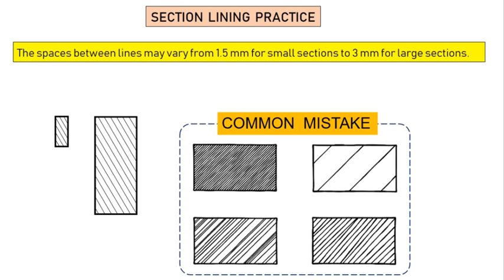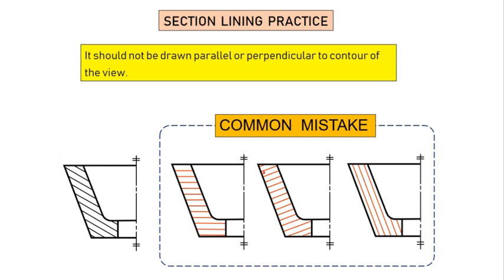A common mistake students make is drawing section lines that are too close together or too far apart. The spacing between the lines should be approximately equal to 1.5mm for small sections or small diagrams, and up to 3mm for large sections. Also remember: section lines should not be perpendicular or parallel to any contour line.